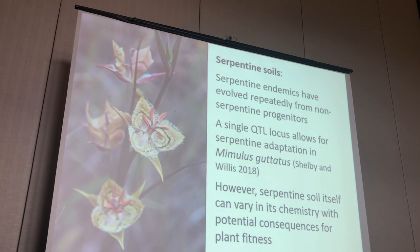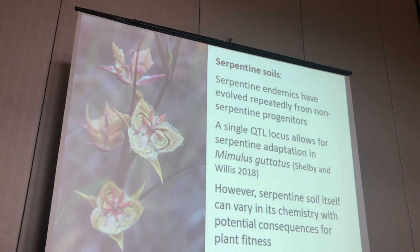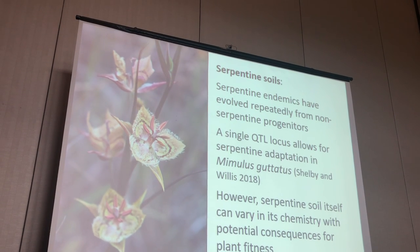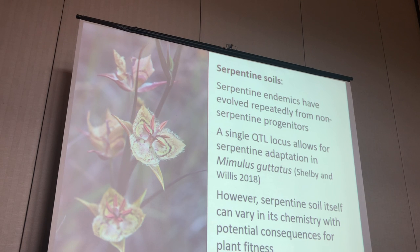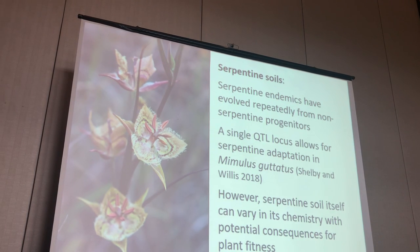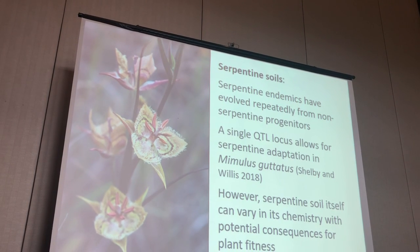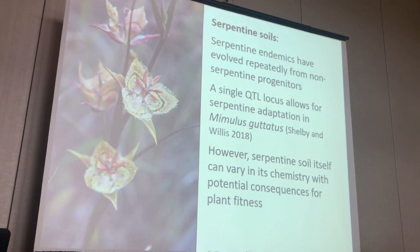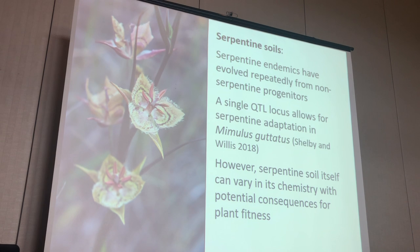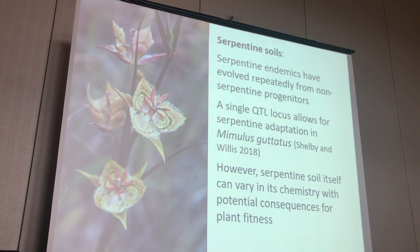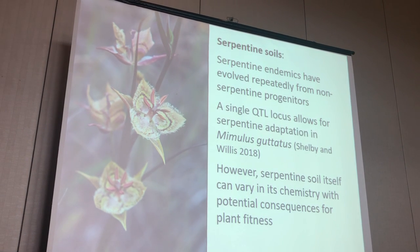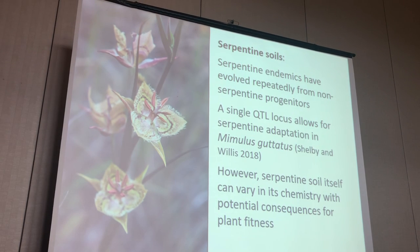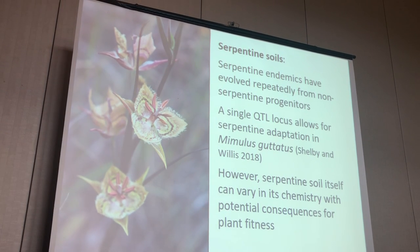Even for species which aren't serpentine endemics, adaptation is typically required for these populations to persist. For example, in Mimulus guttatus, a single QTL locus allows populations to persist on these incredibly stressful soils. But what's often less considered is the fact that serpentine soil itself can often vary quite a lot in its chemistry, and that has potential consequences for plant fitness, and then potential consequences for the distribution of genetic variation in serpentine endemic populations.